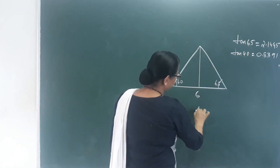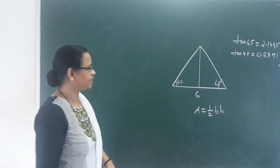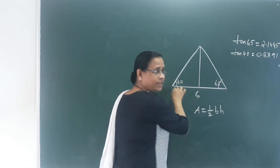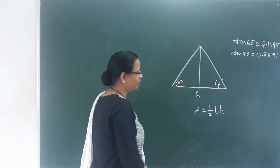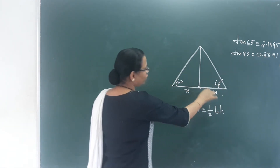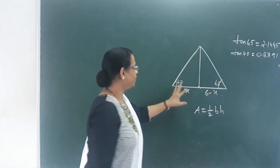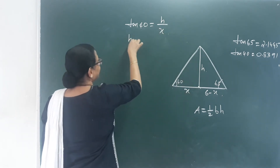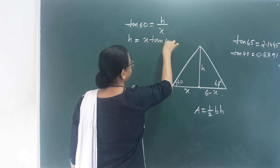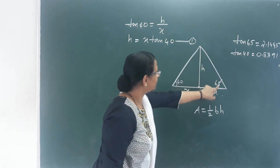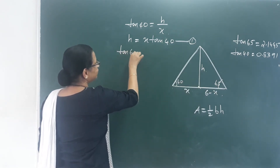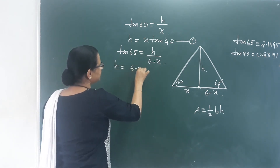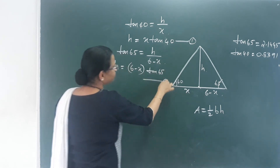Area equals half base into height. The base is 60 cm. We drop a perpendicular of height h at distance x from one end, so (60 minus x) is the other base segment. From the left triangle: tan 40 equals h divided by x, so h equals x·tan 40 — equation 1. From the right triangle: tan 65 equals h divided by (60 minus x), so h equals (60 minus x)·tan 65 — equation 2.